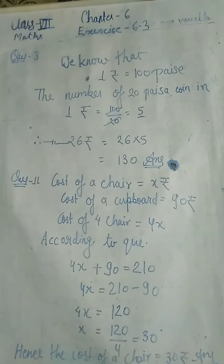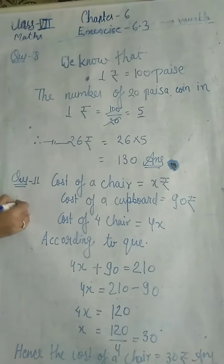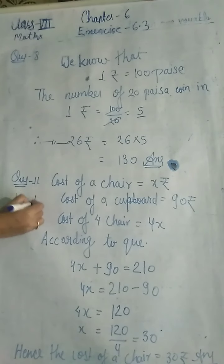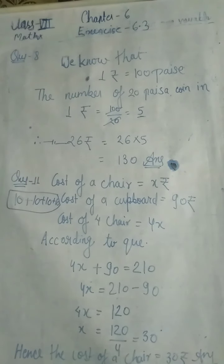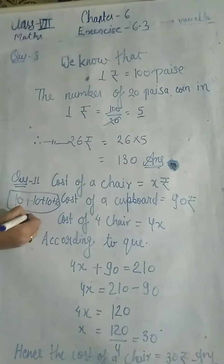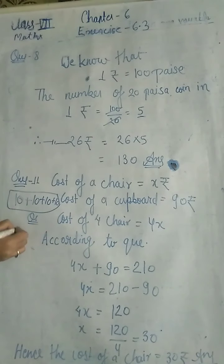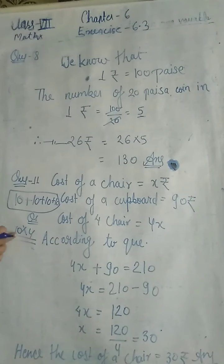Kaise nikala aapne 40? Yeh important hai is question mein. Ek chocolate 10 rupees ki hai — toh 4 chocolates kitne ki? Ya toh aap 10 ko 4 times add kar do: 10+10+10+10 = 40. Ya phir iska ek aur method hai — 10 multiplied by 4 — same value aayegi always. 1 chocolate 10 rupees ki, toh 4 chocolates 40 rupees ki.